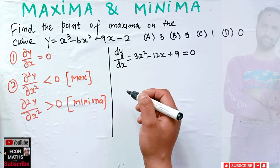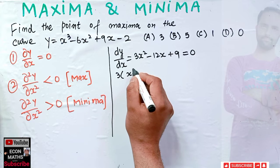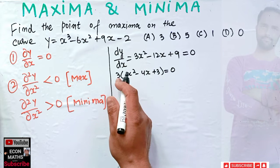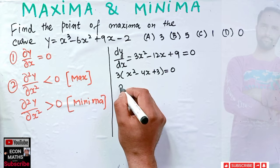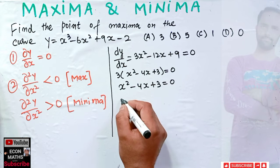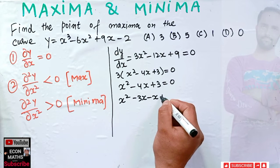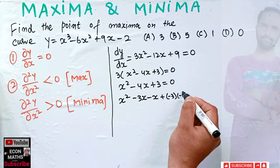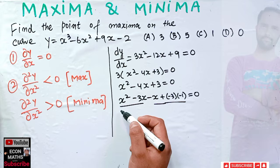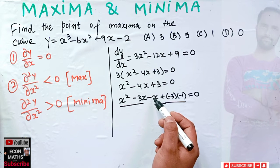We have the quadratic equation 3x² - 12x + 9 = 0. Taking 3 as common, we get x² - 4x + 3 = 0. Splitting the middle term: the sum of the two numbers should be -4 and their product should be 3, so we use -3 and -1, since -3 + (-1) = -4 and (-3)×(-1) = 3.